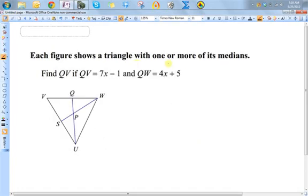We know that one or more of the medians are being represented, which means we know that this is a median and this is a median. So we're trying to find QV, this length here. If we know that this length and we have expressions for this length and this length. Well, since this is a median, that means this is a midpoint, which means these two lengths are equal. So we know that QV is equal to QW.